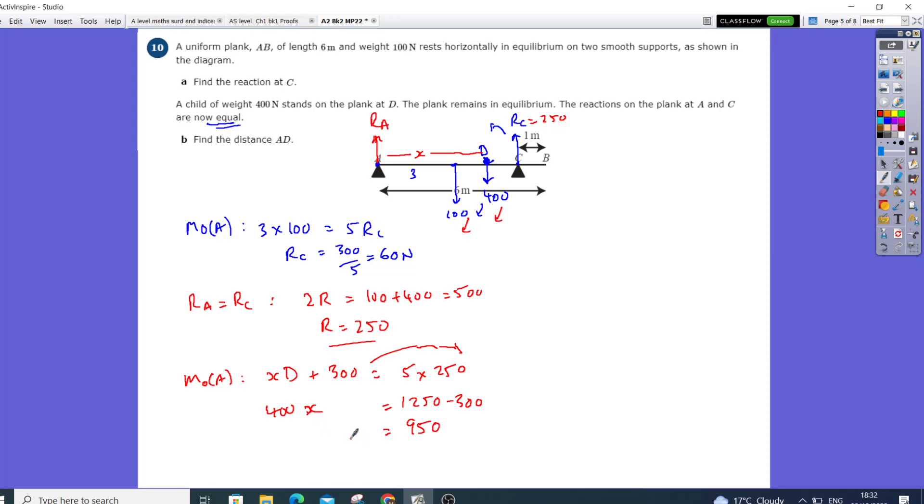So X will equal 950 divided by 400, and that's going to give me a distance of 2.375 meters. So the distance AD will be 2.375 meters.